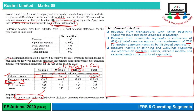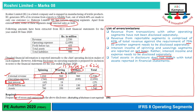Iske baad agar hum dekhte hai to total assets hamare yahaan disclosure mein nazar aa rahi hai, lekin segment-wise liabilities jo hai unko nahi bataya gaya, jabke wo disclose honi chahiye thi in the disclosure note as well. So liabilities disclose nahi hoi — yeh ek aur error hai.